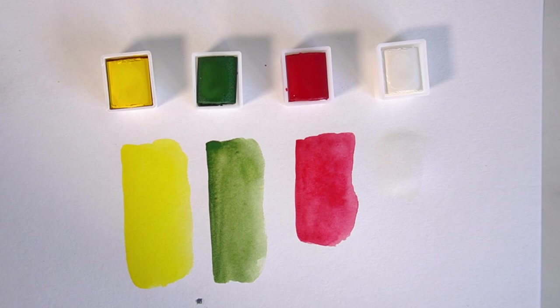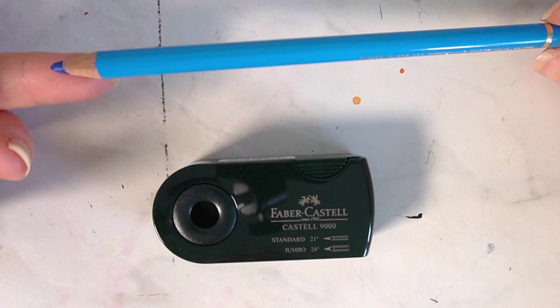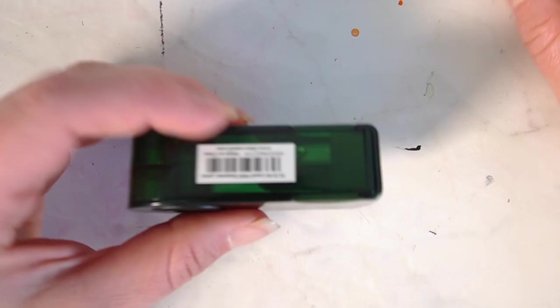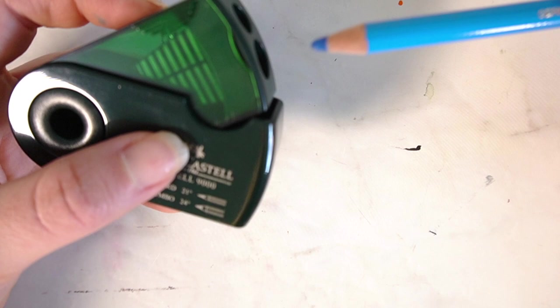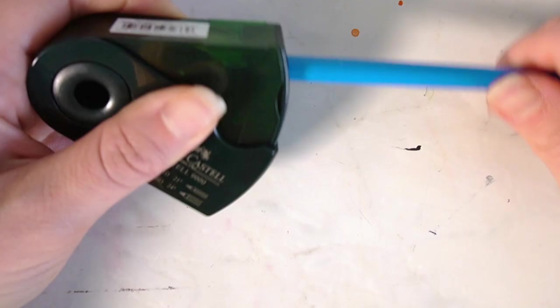So we'll sharpen this phthalo blue. It's looking like it's got a bit of a dull point. I'll open it up. So this one will fit in that top section. The bottom one is for the jumbo pencils. Feels like a really good grip on that.